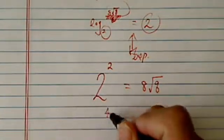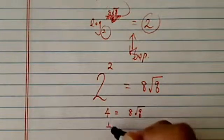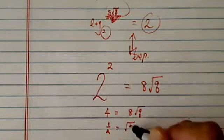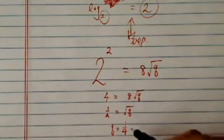Once we get here, it's pretty easy. 4 is equal to 8 radical q. And then divided by 8, I have 1 half equal to radical q. So my q is equal to 1 quarter.